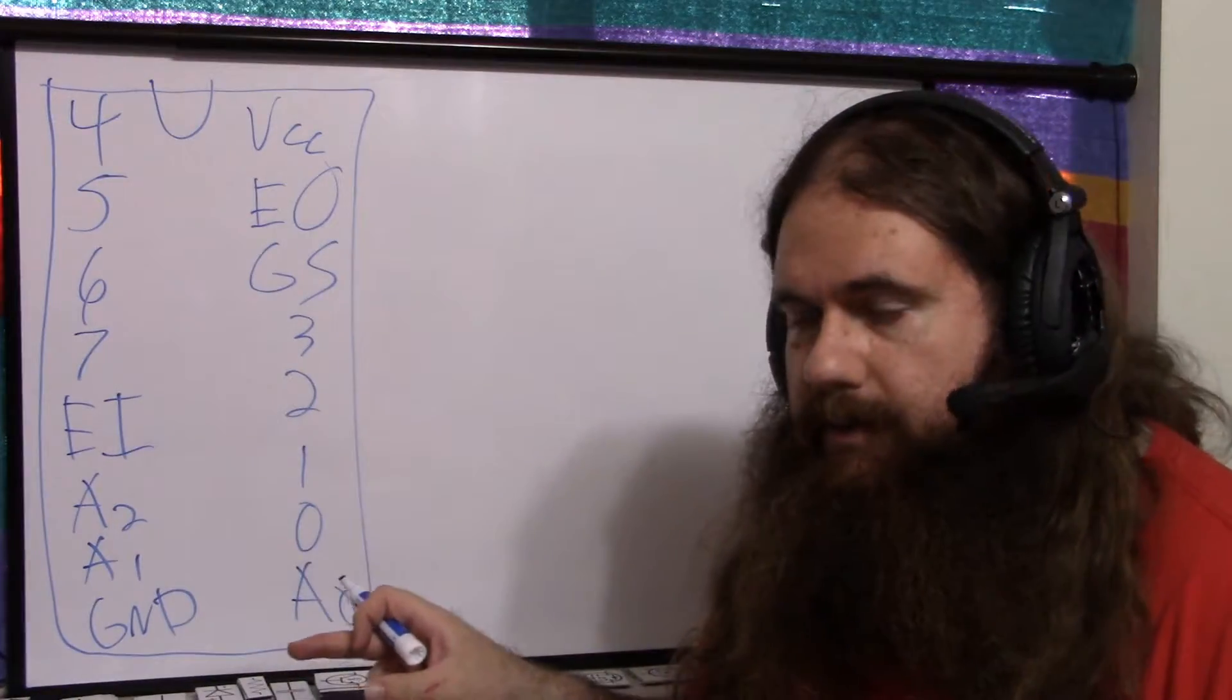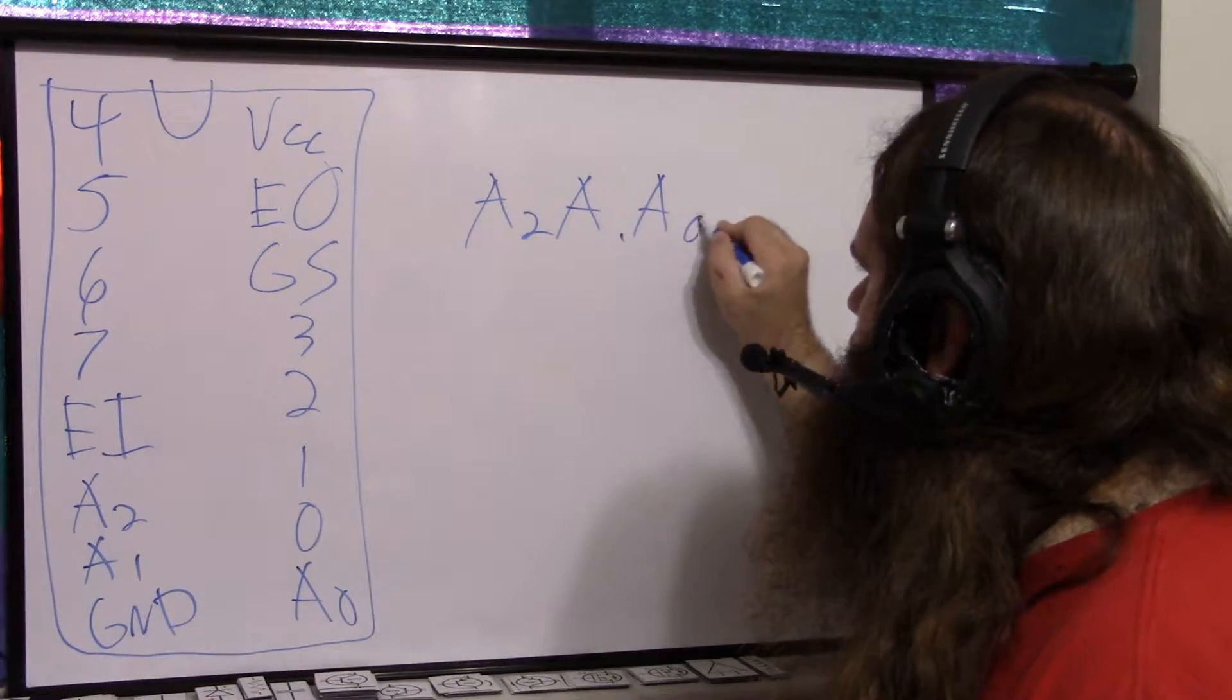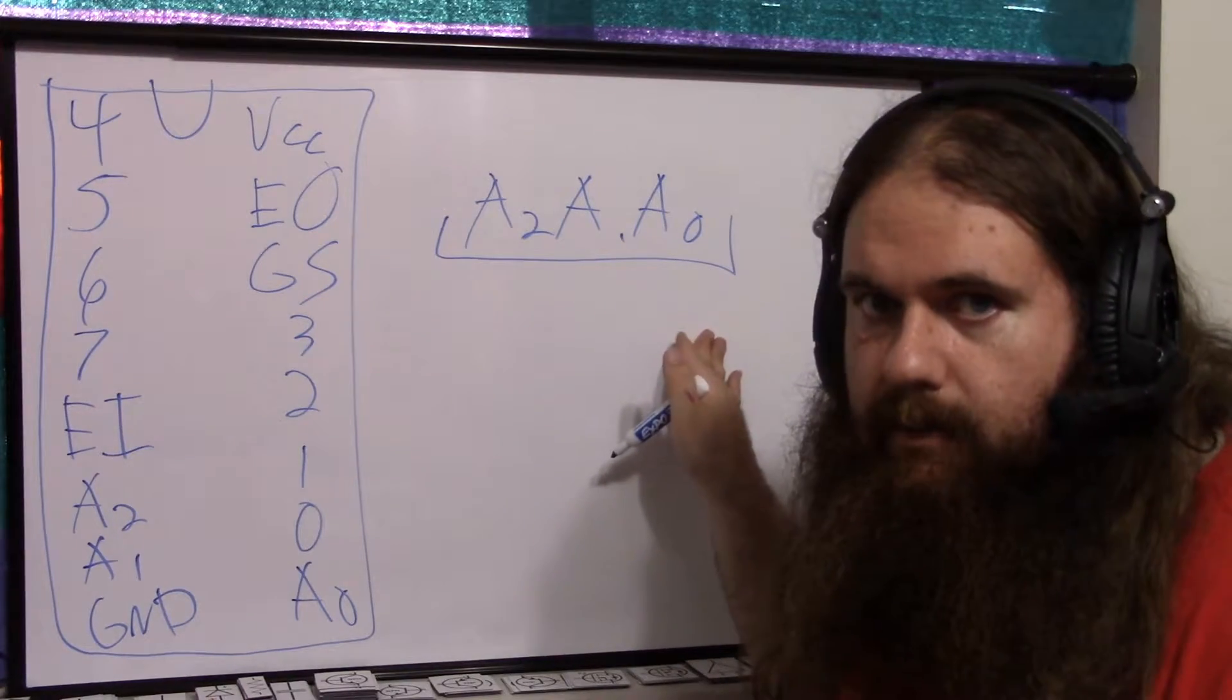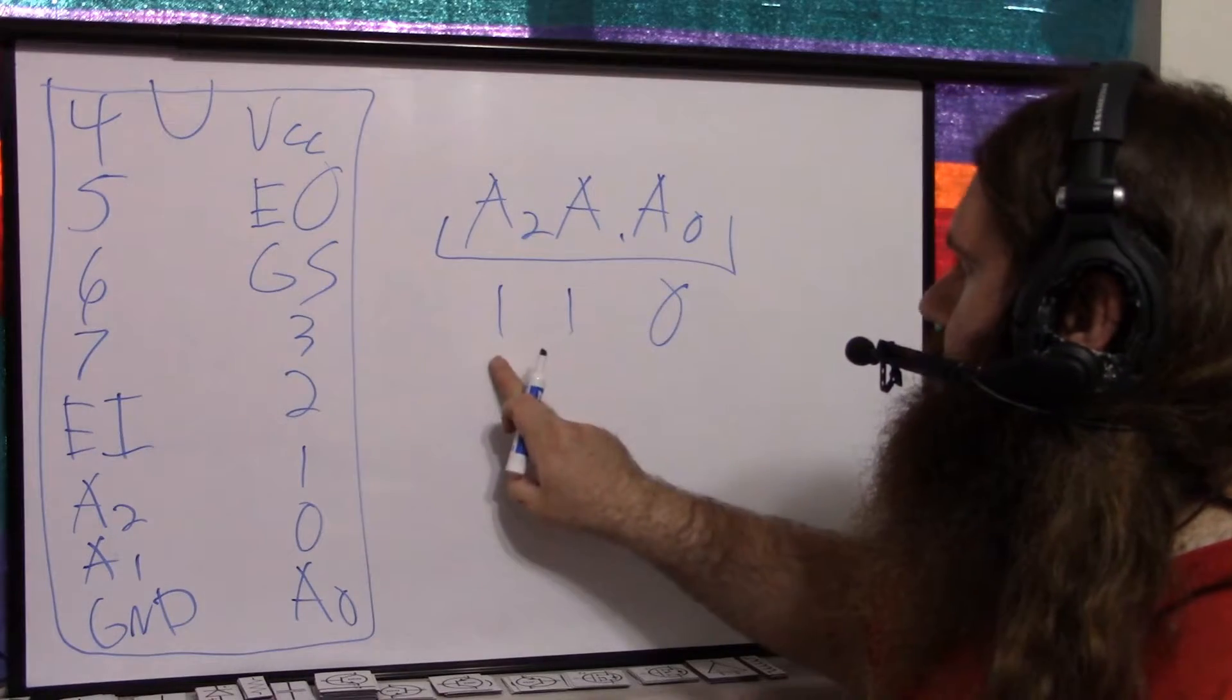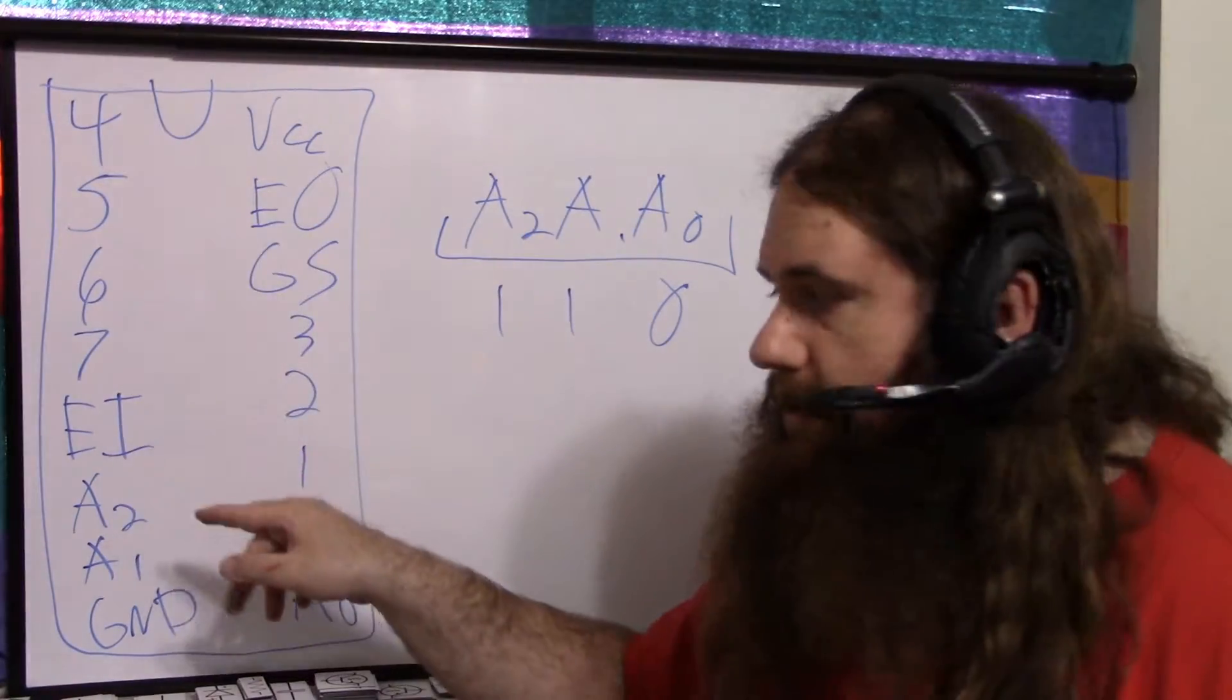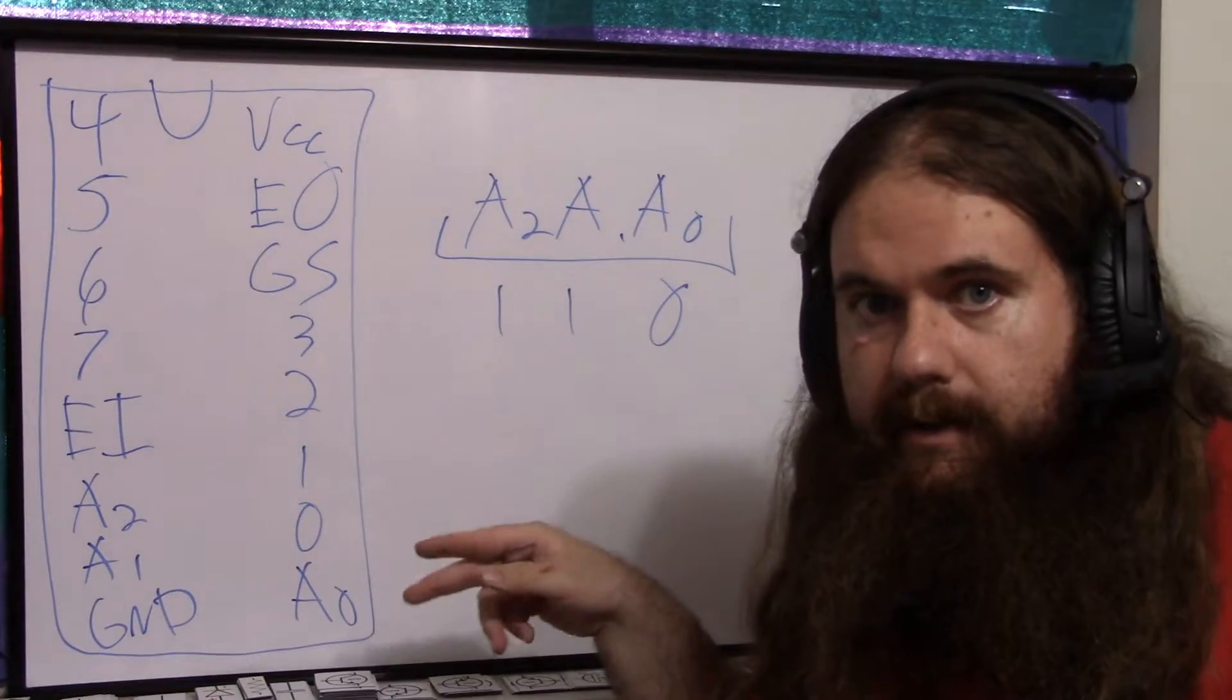So VCC and ground are obvious. A2, A1, and A0. This is your 3-bit binary number. This is your output with A2 being the highest order bit and A0 being the lowest order bit. So this would be 4 plus 2 plus 0 is 6. And that value is going to correspond to 0 through 7.